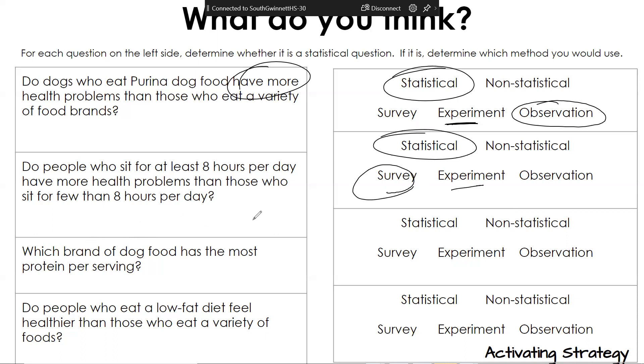All right, which brand of dog food has the most protein per serving? Is this going to be statistical or not statistical? Why do you say that? We're not looking for a specific percentage. We're looking for how much protein do they have. Now, is this a survey, experiment, or observation? Couldn't you just look at them in the back of the can and see how many grams of protein?